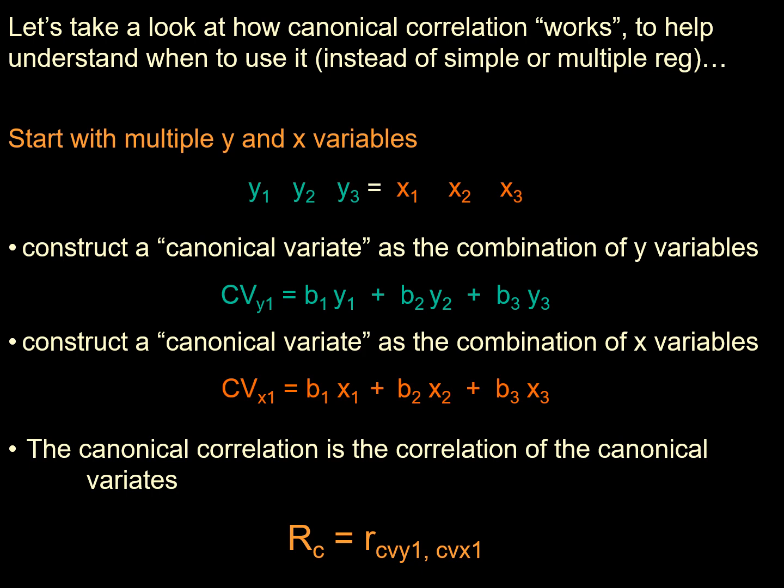Let's look at how canonical correlation works to understand when and where to use it, and whether we need single or multiple regression. We always start with multiple y and x variables, since canonical variables involve multiple x and y. We construct a canonical variate as a combination of y variables — by taking all possibilities of the y variables, we create a canonical variable. Similarly we construct the canonical variable for x.